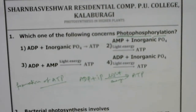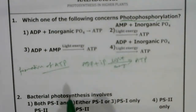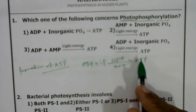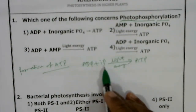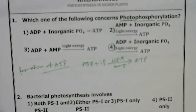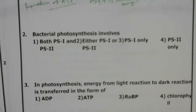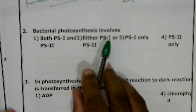There are three types of phosphorylation: photophosphorylation, oxidative phosphorylation, and substrate-level phosphorylation. During photosynthesis, light energy is used for formation of ATP from ADP and inorganic phosphate — this process is called photophosphorylation. So the correct answer is the fourth option.